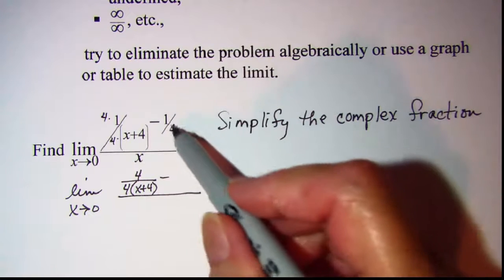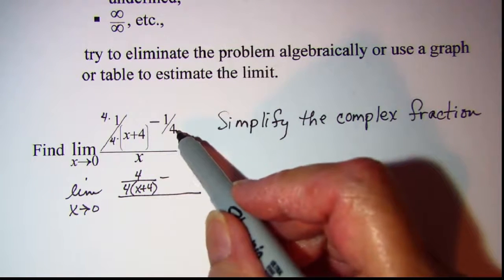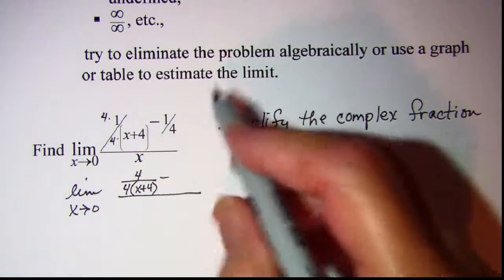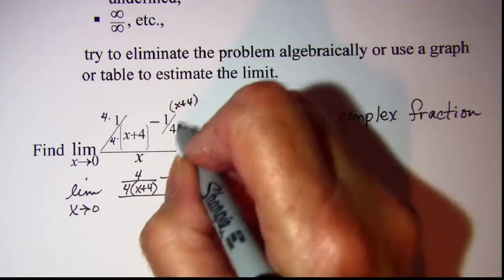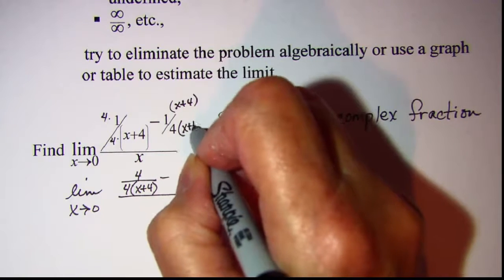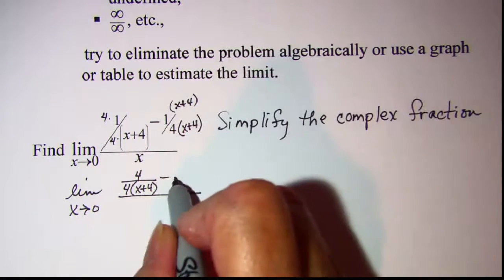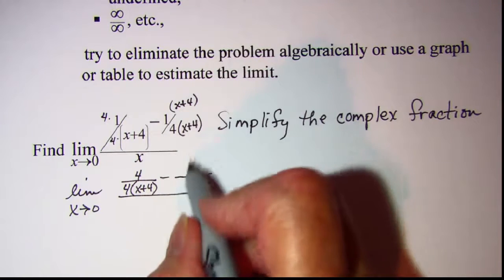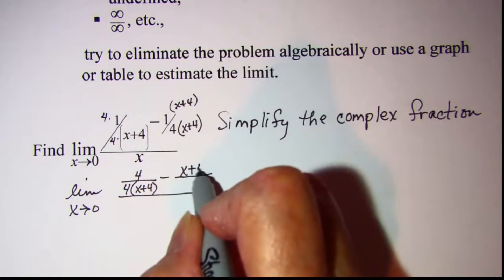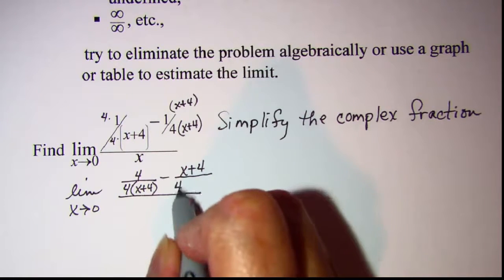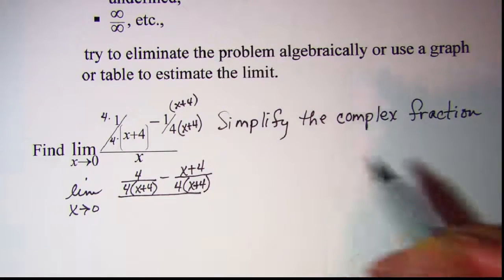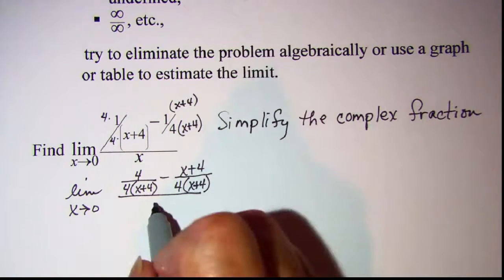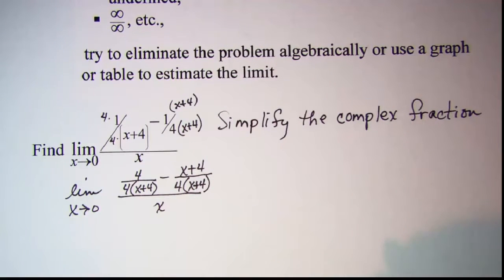And then for my second fraction, I need a factor of (x + 4), so I'll multiply top and bottom by (x + 4), and I have 1 times this quantity, so (x + 4) over 4(x + 4). And then in my denominator, I still have x.